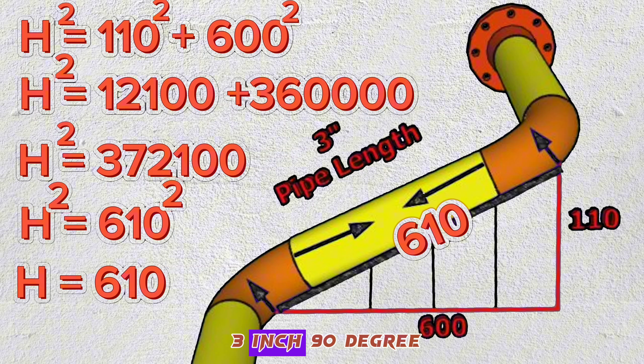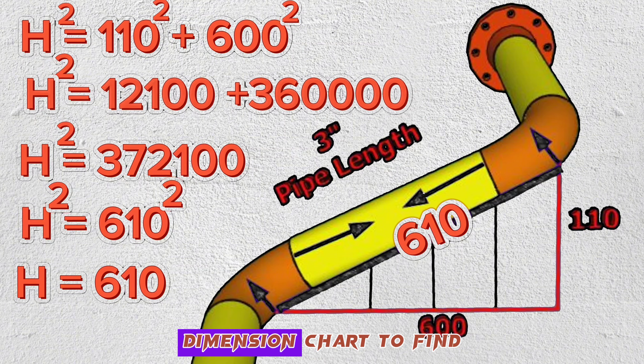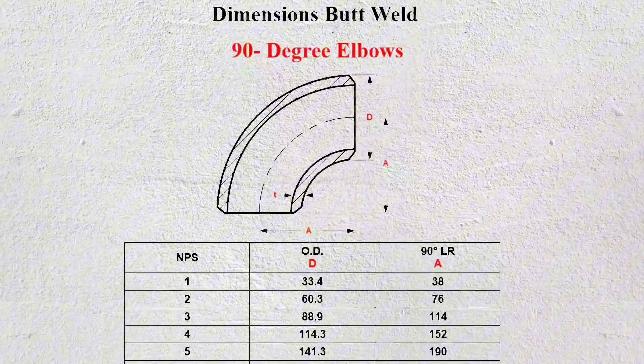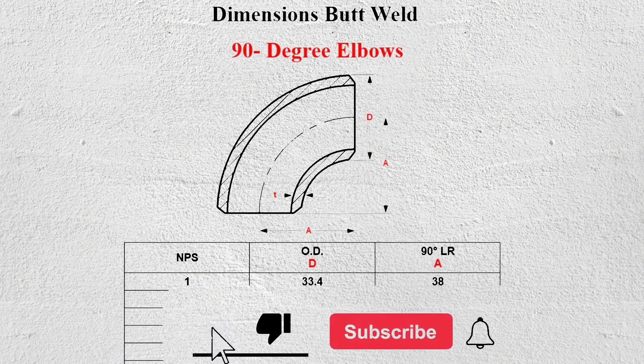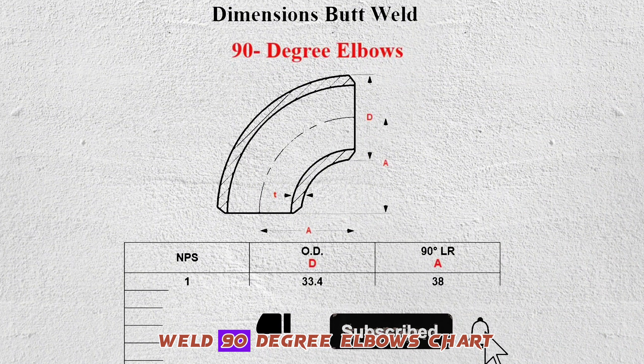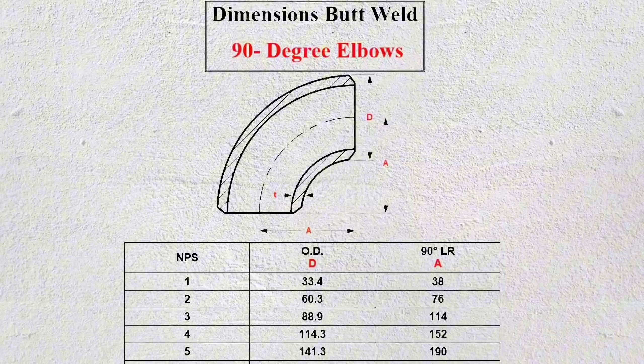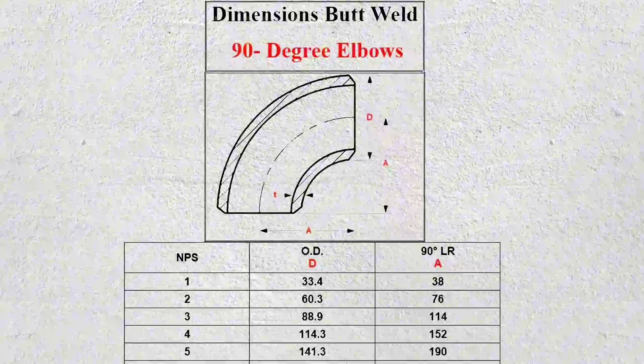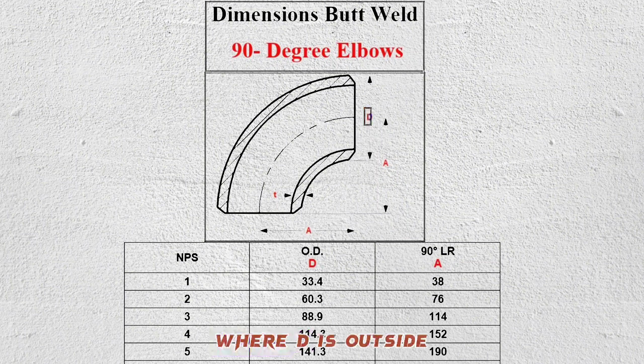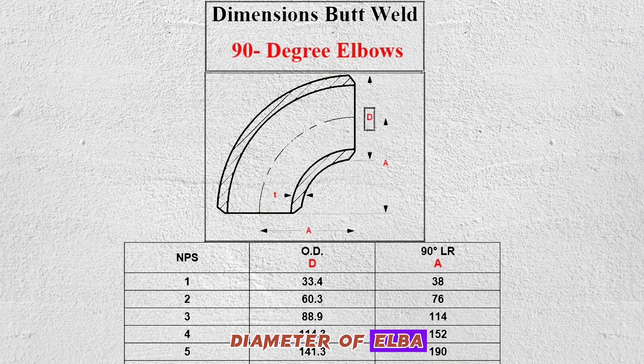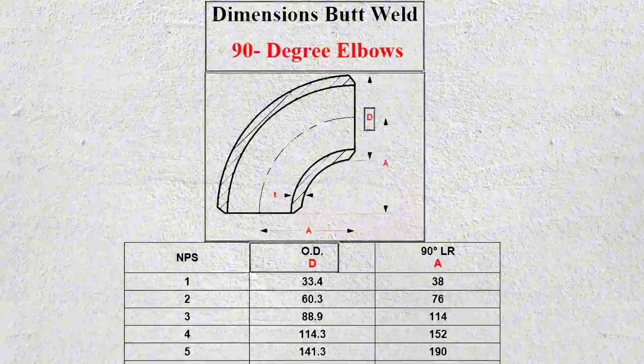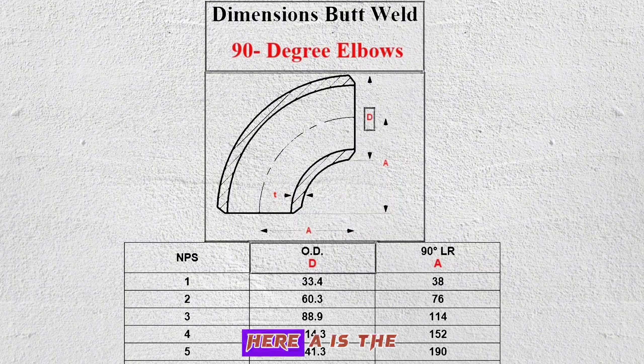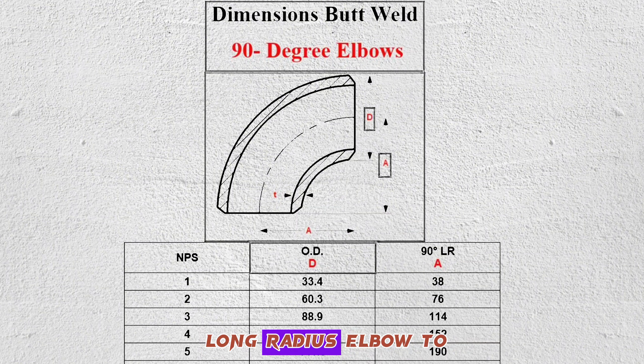The elbows here are 3 inch 90 degree butt weld elbows. We will use the 90 degree elbow dimension chart to find the elbow lengths. This is dimension butt weld 90 degree elbows chart. This is a 2D isometric illustration of a 90 degree elbow. Where D is outside diameter of elbow. Here A is the distance from the center of the long radius elbow to the end.